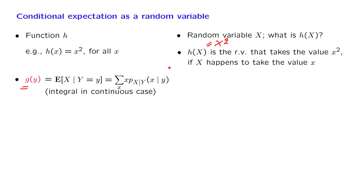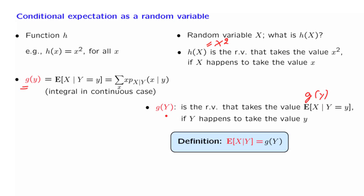Now that we have defined g, we can ask, what is this object? It's a function of capital Y, a function of a random variable, so it should be a random variable by itself. By analogy with the earlier concrete example, it is the random variable that takes the numerical value g of little y whenever capital Y happens to take the value little y. But g of little y has been defined to be the same as this conditional expectation. So it's the random variable whose value is this conditional expectation, which is a particular number, if capital Y happens to take the value little y. This particular random variable that we have defined here, g of capital Y, we call it the abstract conditional expectation of the random variable X given the random variable Y.